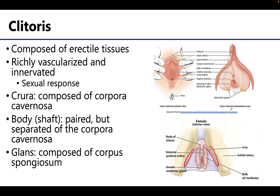The body or shaft of the clitoris is composed of paired corpora cavernosa, separated by an incomplete fibrous septum. Lastly, you have the glans clitoris, located at the visible tip. This is sometimes referred to as simply 'the clitoris,' which is not a complete indication of the entirety of the clitoris, but it is often referred to that way because it is observable. The glans clitoris is composed of corpus spongiosum erectile tissue and is highly innervated.